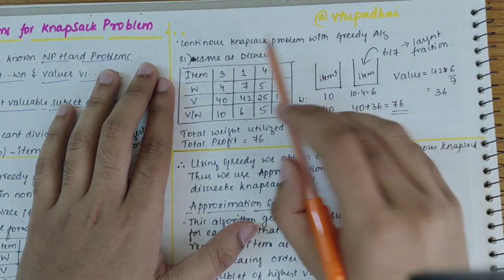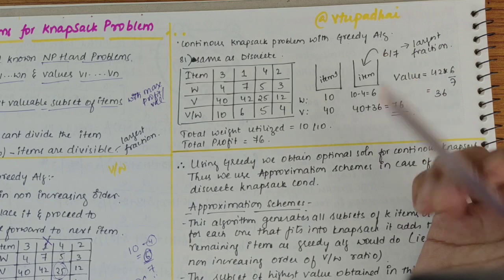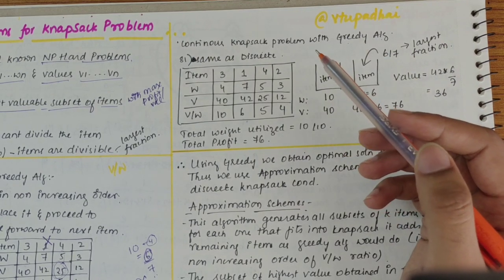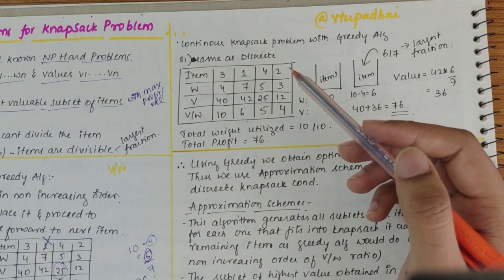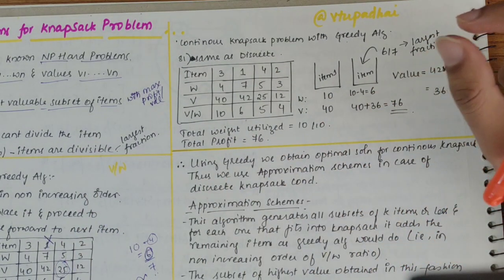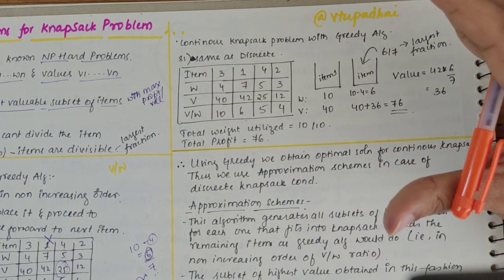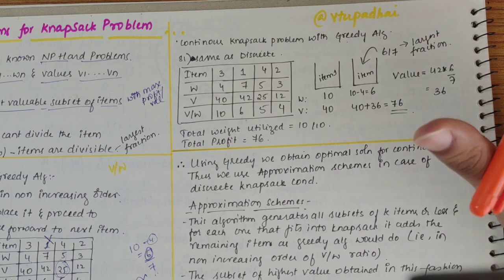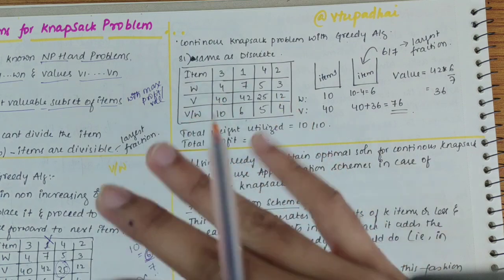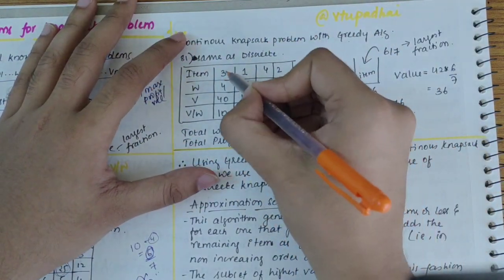This was about discrete knapsack problem. Let's move on to continuous knapsack problem now. First step is same as greedy, second step is also same, that is to arrange in non-increasing order. But the third step is to repeat the following operation until knapsack is filled to its fullest capacity. In previous discrete one, 9 by 10 of capacity was filled, but here we have to fill it to maximum capacity.